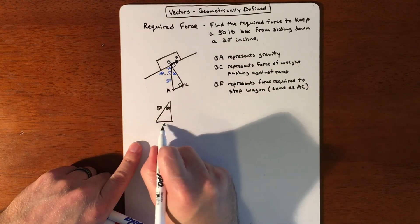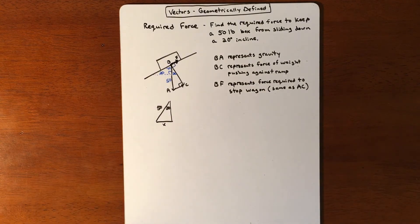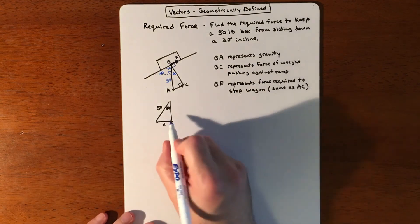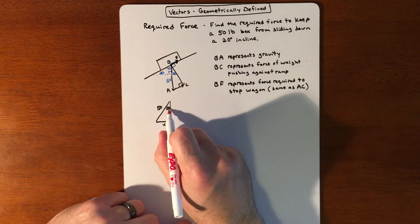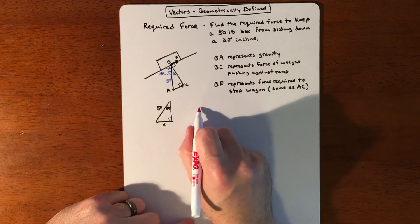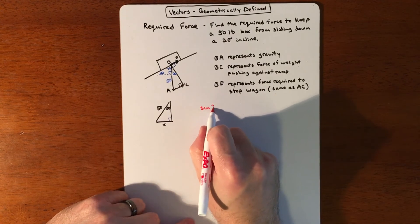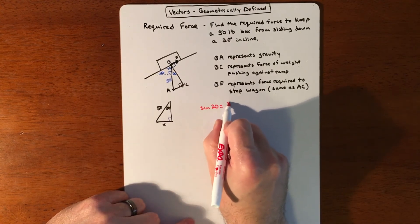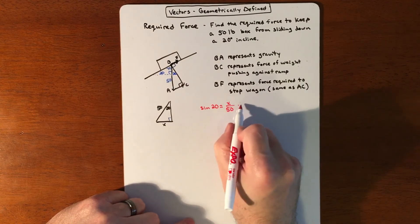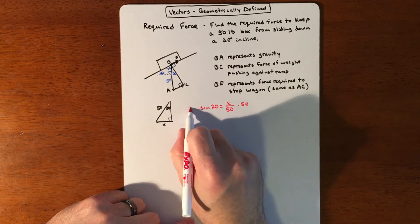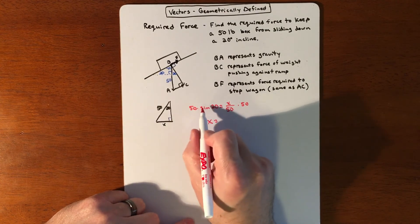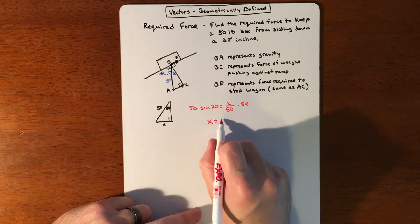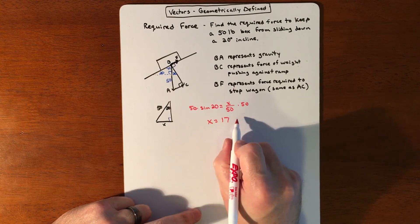Because it's a right triangle, we're just going to do some regular SOH CAH TOA. We're looking at opposite over hypotenuse, so sine of 20 equals opposite over hypotenuse. We'll multiply the 50 over, and x equals whatever this turns out to be, which gets you about 17.